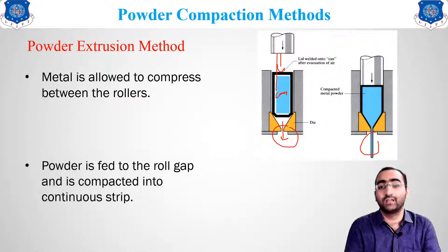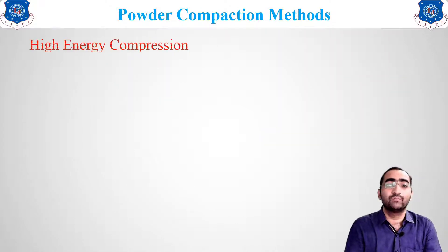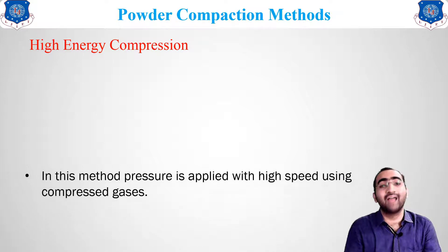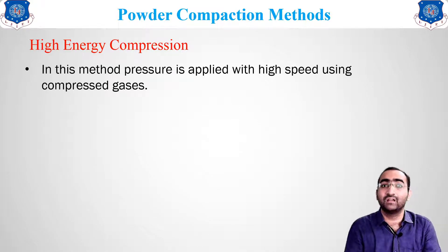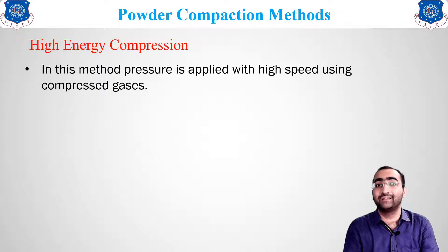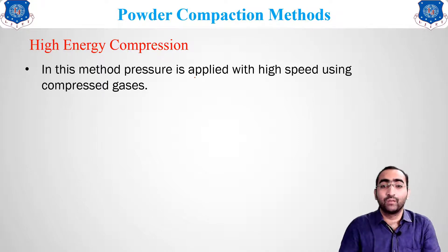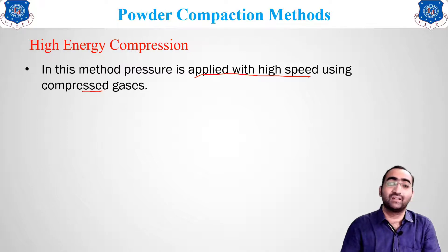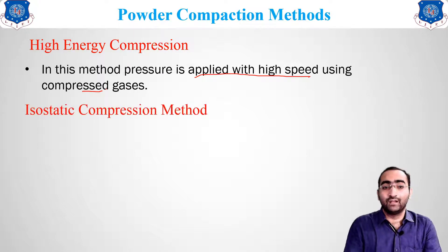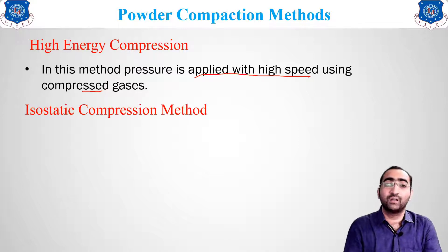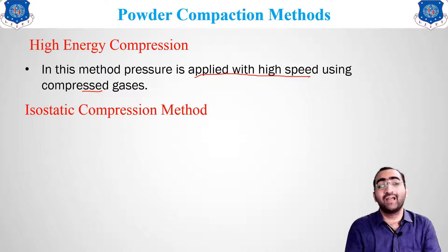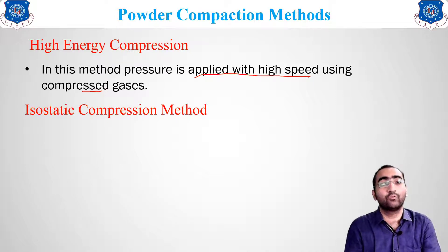The fifth method is high energy compression, which uses a hydraulic press. Pressure is applied at high speed using compressed gases. The compressed gas brings the metal powder particles very close together, resulting in powder compression.